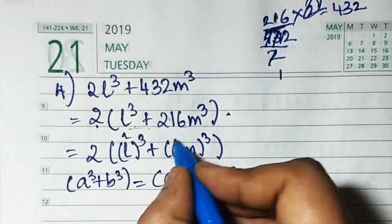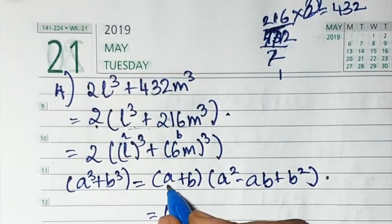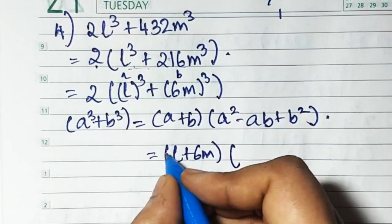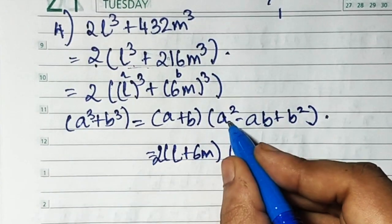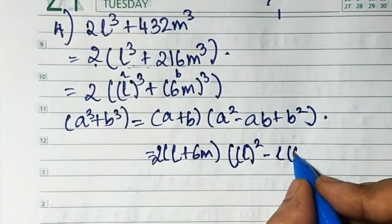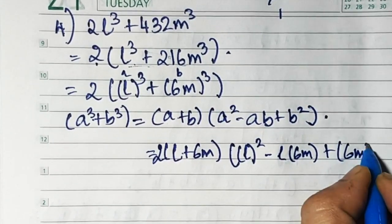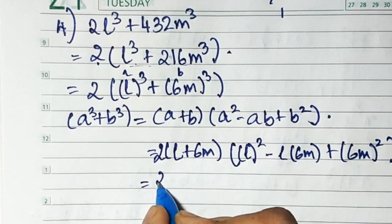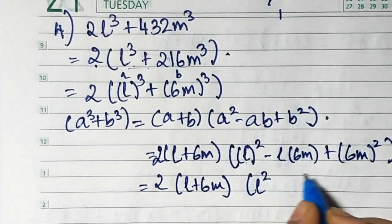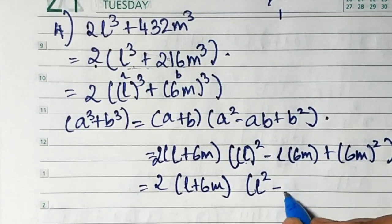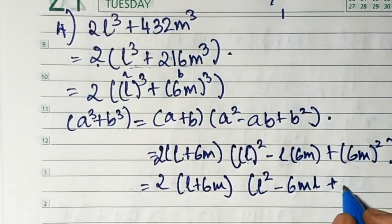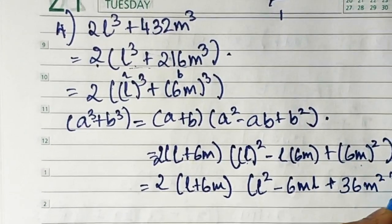Don't forget to put the 2 outside. So we write 2 times l plus 6m times the bracket l square minus l into 6m plus 6m square. Solving the bracket: l square minus 6lm plus 36m square. The 2 remains outside and l plus 6m also comes down.